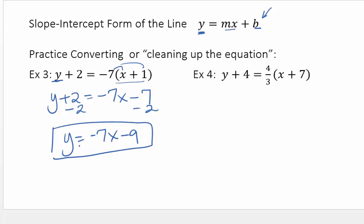So this is what I call the cleaned up version of the line, where it's solved for y. Example 4. Now, notice what you have. You've got 4 thirds out here in front of the parentheses. Now, that's gross. A lot of people don't like fractions. So here's the trick to getting rid of the fraction.